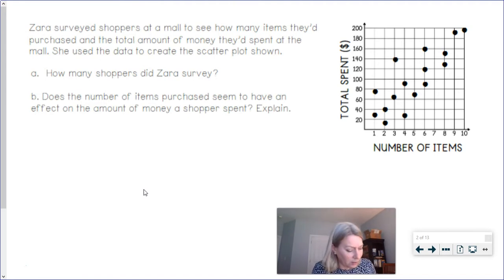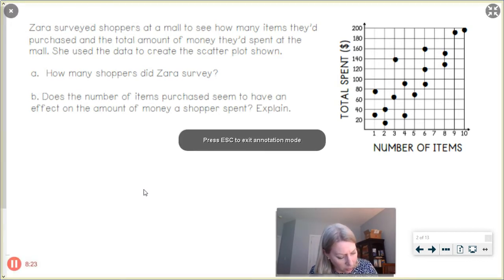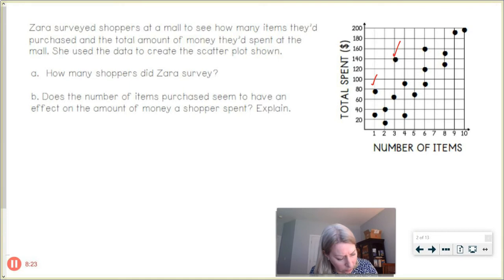All right, so to find out how many shoppers are there in the survey you basically have to count up all those little dots. So let me see if I can mark them. 1, 2, 3, 4, 5, 6, 7, 8, 9, 10, 11, 12, 13, 14, 15, 16. I see 16 dots on my scatter plot. So each dot is one data point meaning one shopper who we surveyed said how many items they purchased and what they spent.